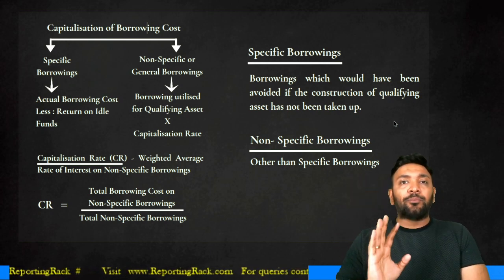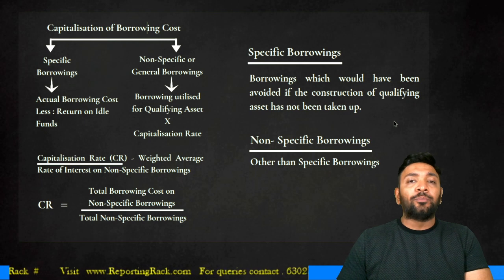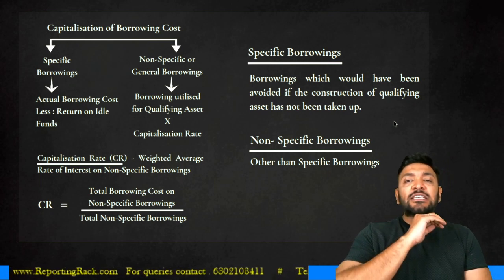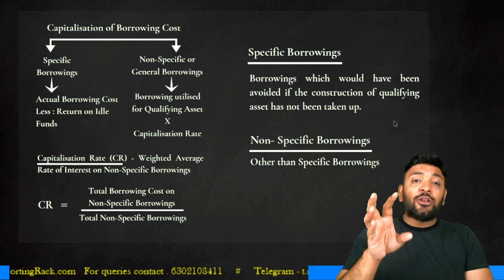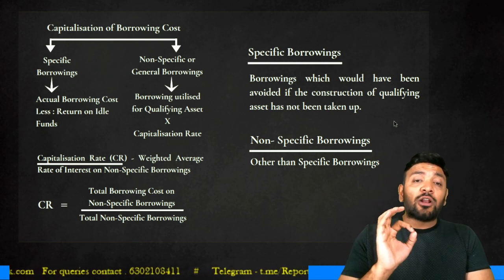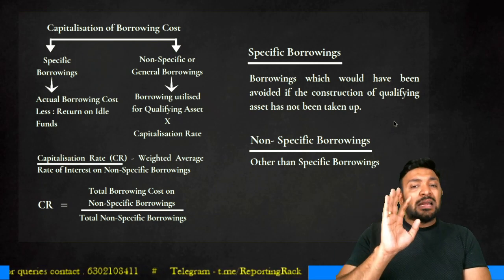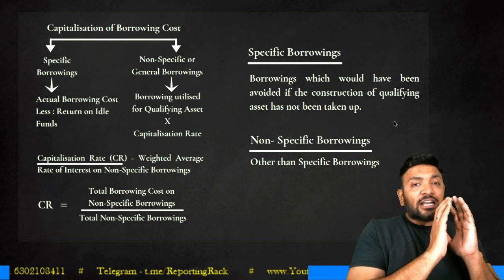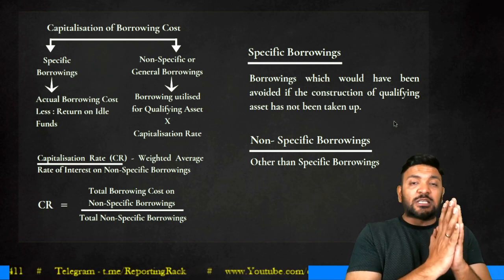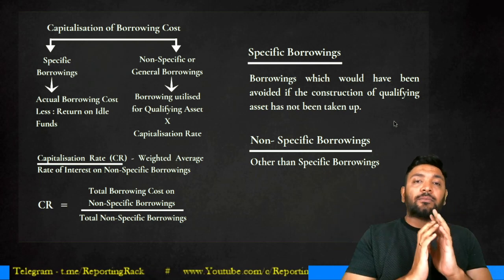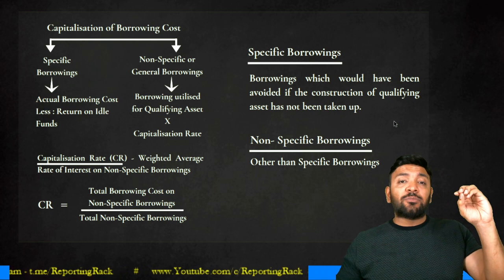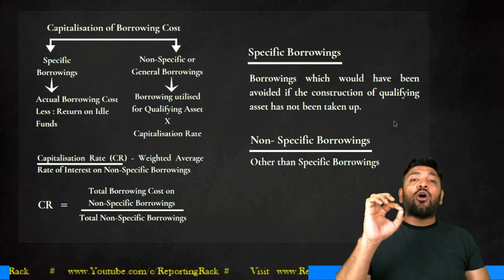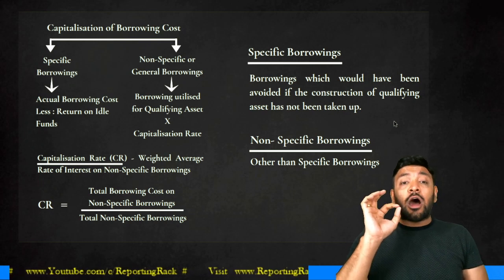For a term loan taken for general purposes where only a part has been utilized for construction of a qualifying asset, it is called a non-specific or general borrowing. For specific borrowings, the interest or borrowing cost is directly attributable to the qualifying asset. Therefore, borrowing cost eligible to be capitalized equals actual borrowing cost incurred on the borrowing, reduced by return on idle funds.